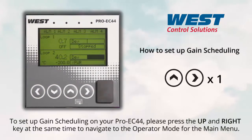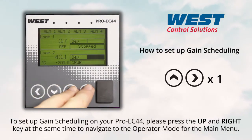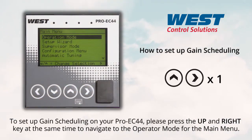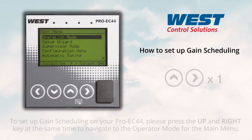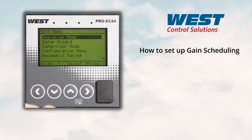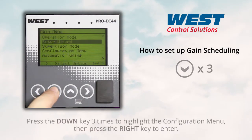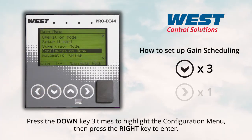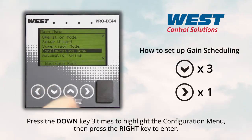To set up gain scheduling on your ProEC44, press the up and right key at the same time to navigate to the operator mode for the main menu. Press the down key three times to highlight the configuration menu, then press the right key to enter.